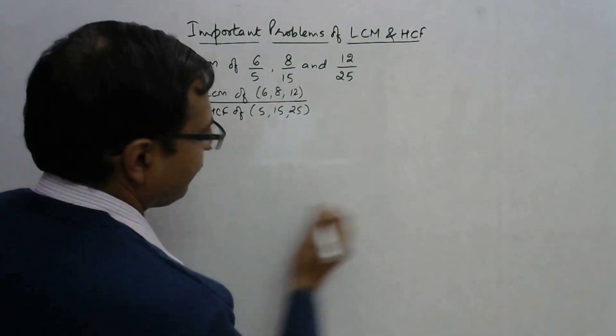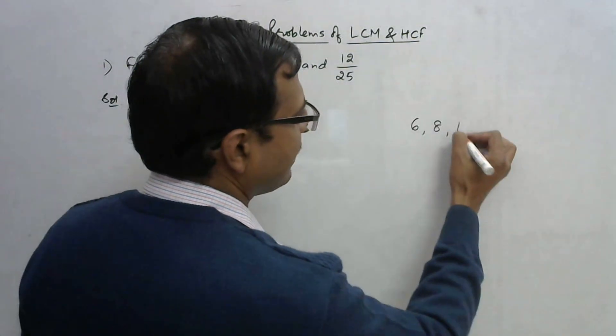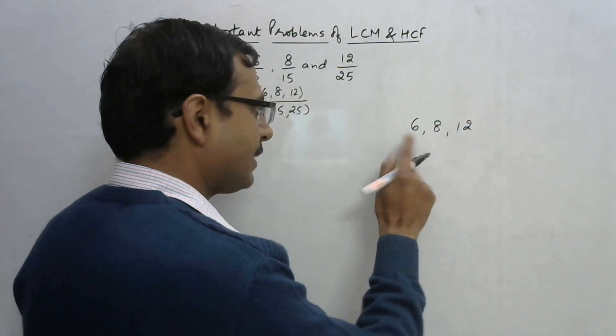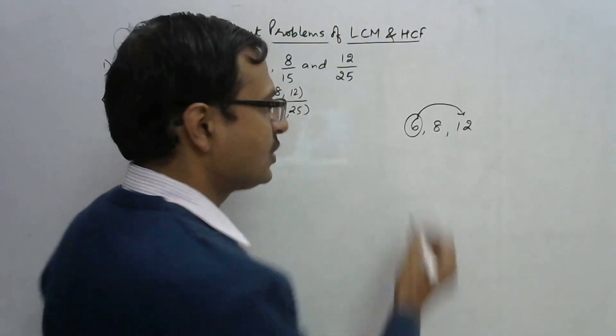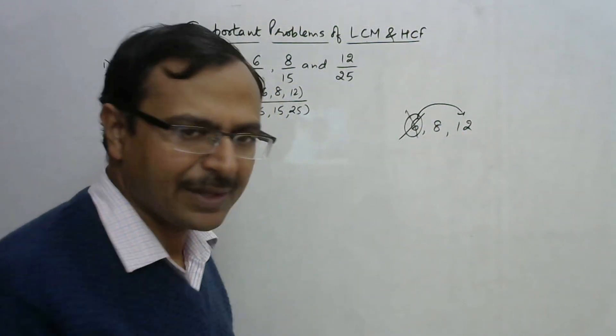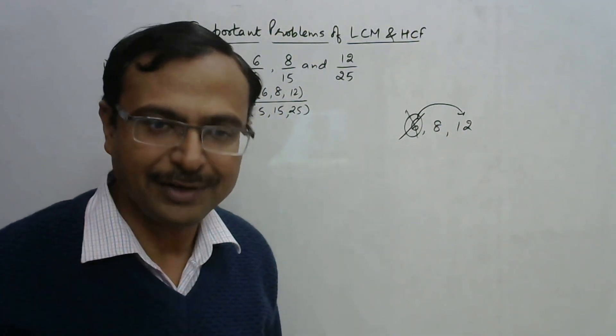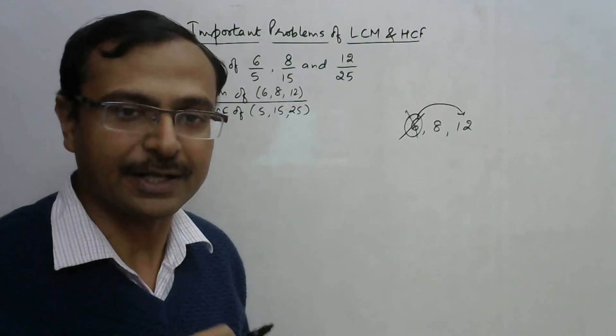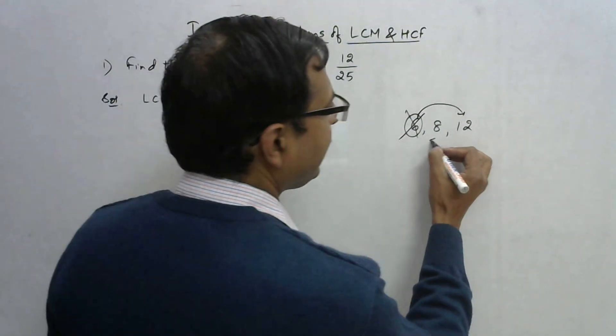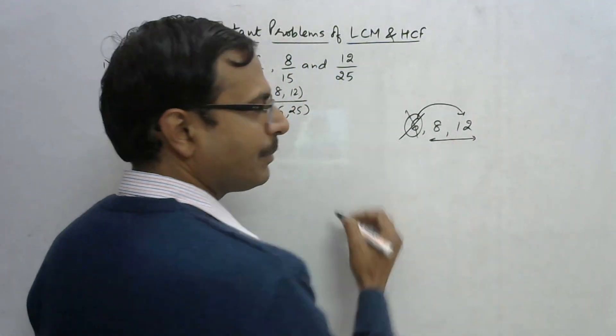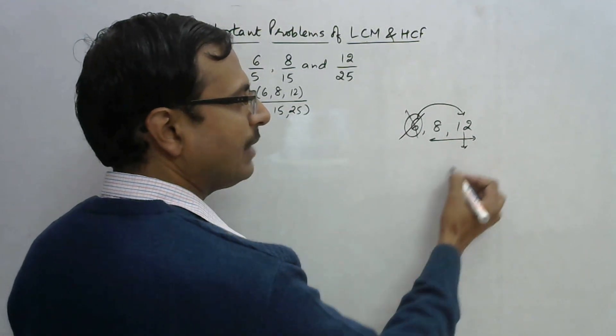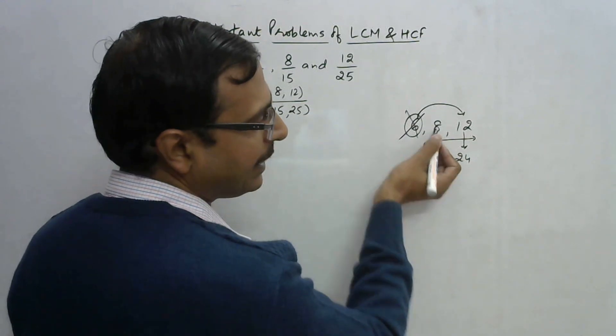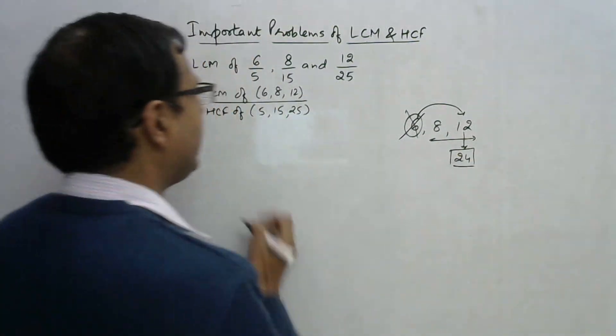For 6, 8, and 12: there is a number 6 which divides 12 exactly, so just forget 6. The smaller number is to be forgotten if it divides one of the other given numbers. Out of 8 and 12, 12 is larger but not divisible by 8. Take multiples of 12: 24 is divisible by 8, so your LCM is 24.